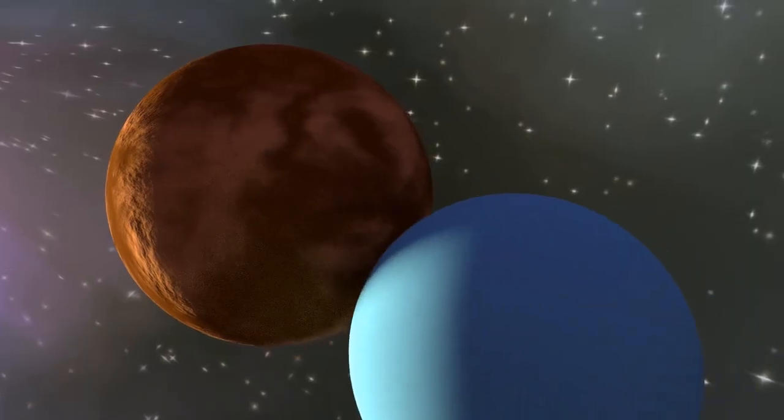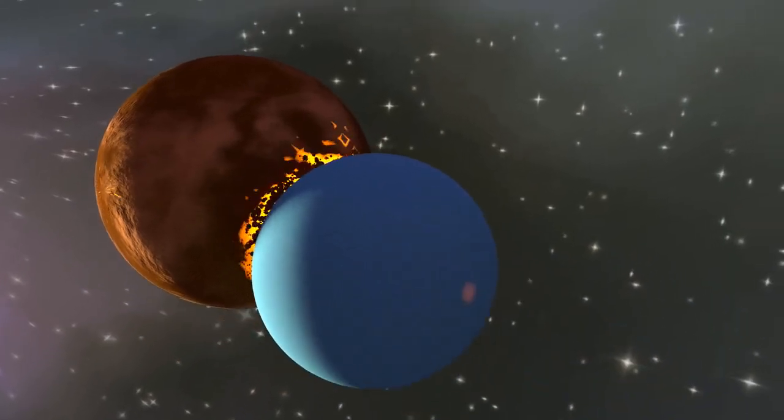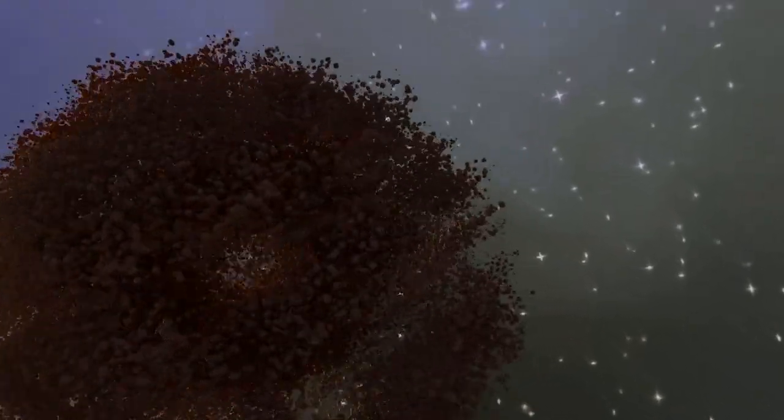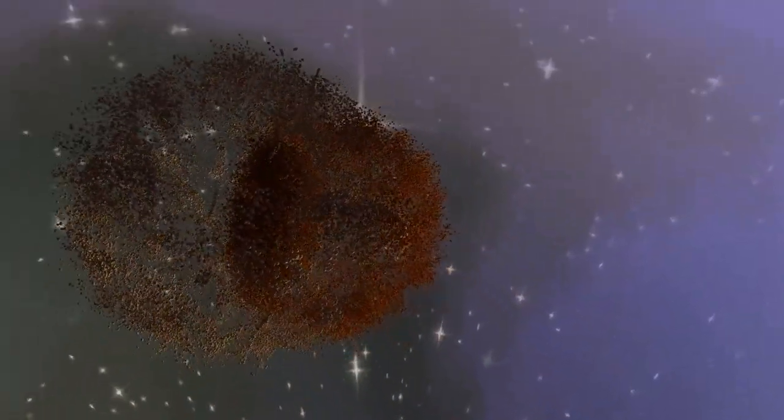Together, rogue planets and gamma-ray bursts represent two of the most unpredictable and devastating forces in the universe. But how dangerous are they, really? And could they threaten our existence?